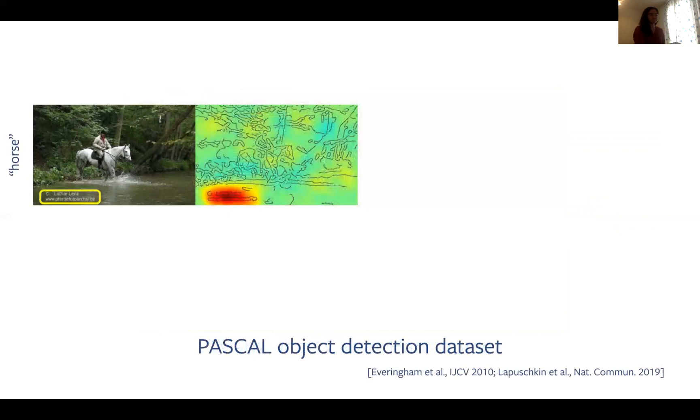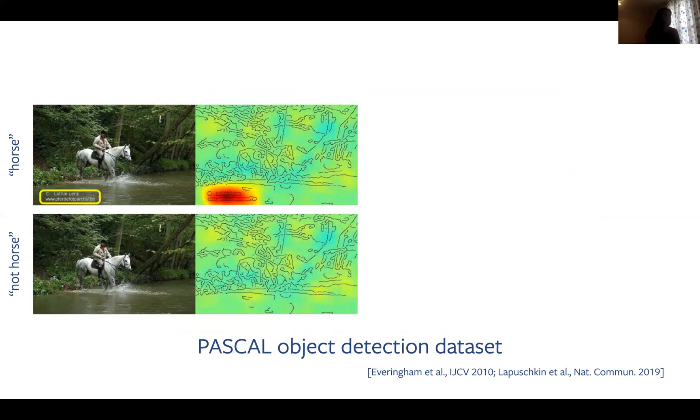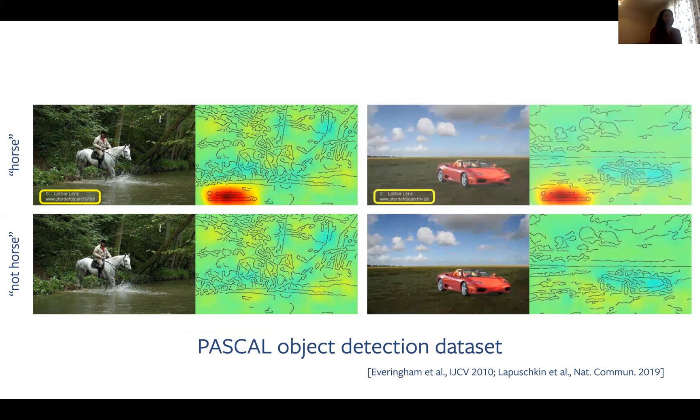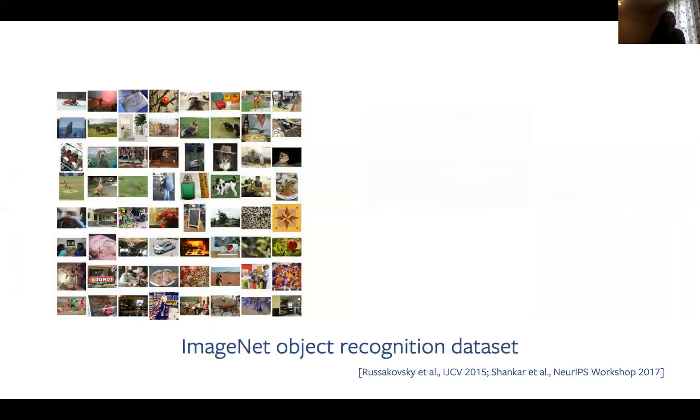One great example of this is in an early object detection data set known as Pascal. Here, many of the horse images contained a watermark much like this one. Recent work showed that when you remove that watermark, the image is no longer classified as a horse. They also took an image that clearly did not contain a horse and added a watermark to it, which was now classified as containing a horse. This seemingly silly example touches on one of the biggest issues in computer vision today, and that is the existence of biased data sets, which I'll briefly describe now.